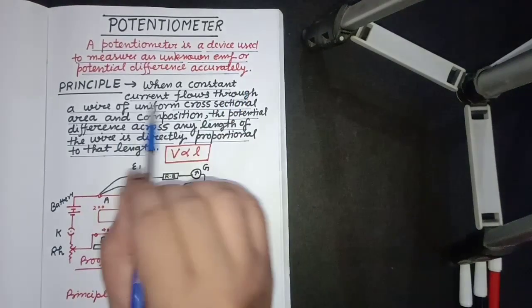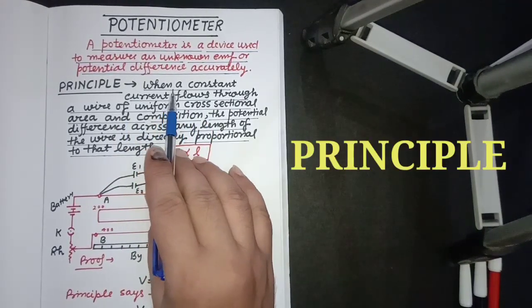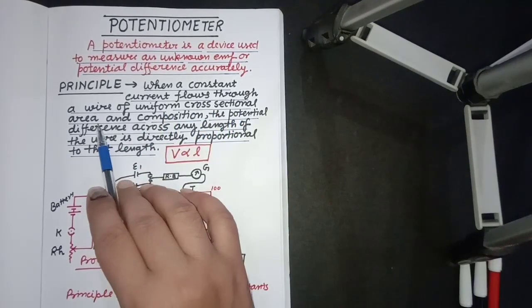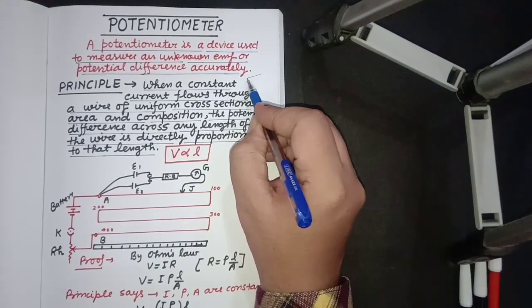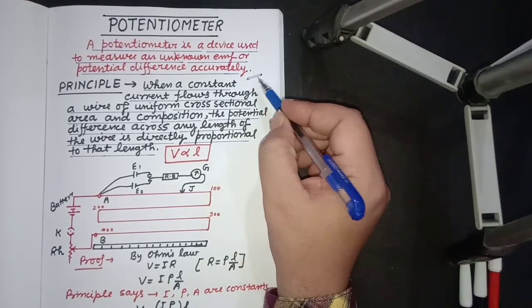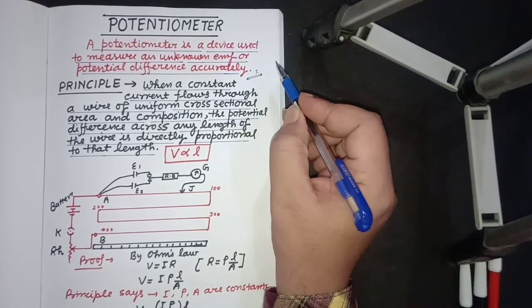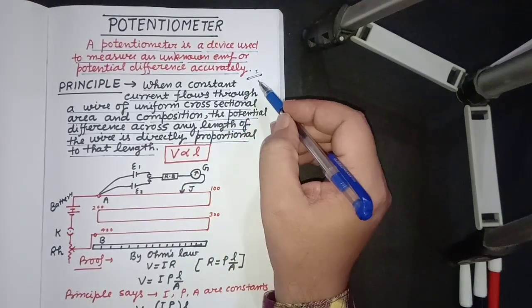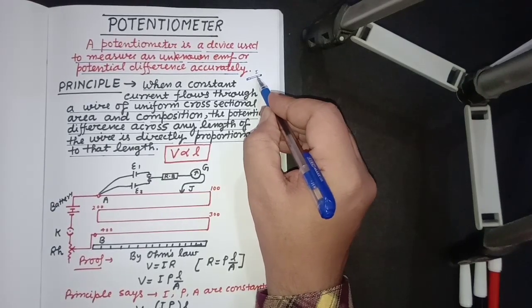difference. Now the principle: when a constant current flows through a wire of uniform cross-sectional area, suppose this way we have this wire with uniform cross-sectional area and composition, the potential difference across any length of the conductor